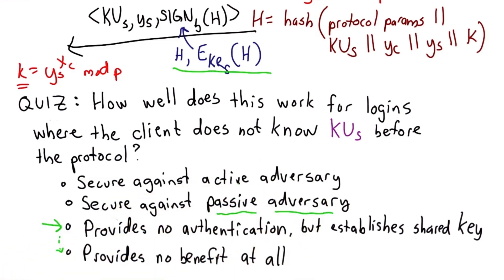If it's a passive adversary, well, that assumes the message actually does get to the right place, so it provides some security against the passive adversary who can't intercept or inject new messages. It allows you to establish that key but doesn't provide any authentication.